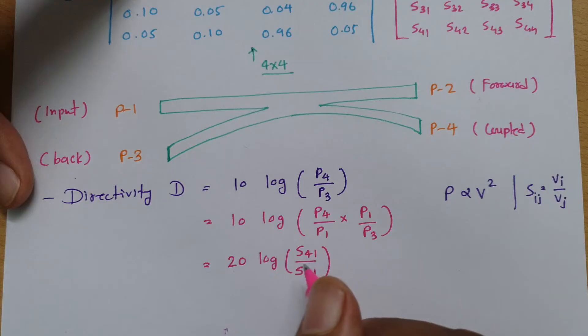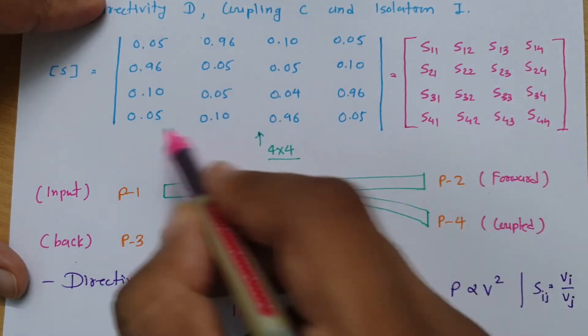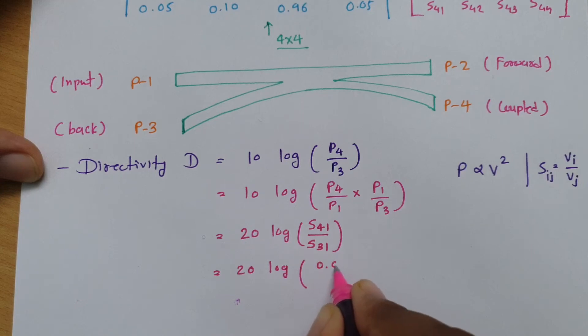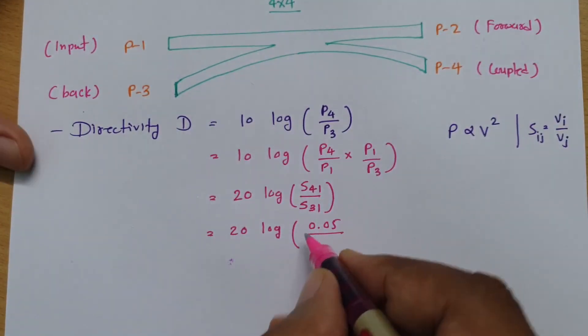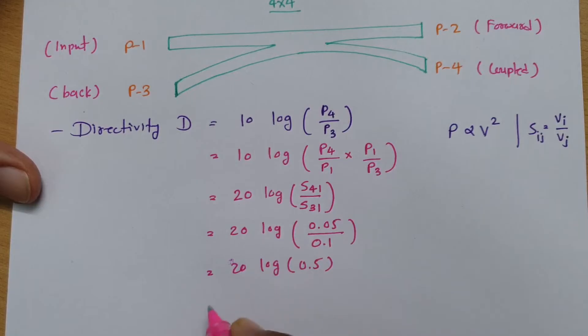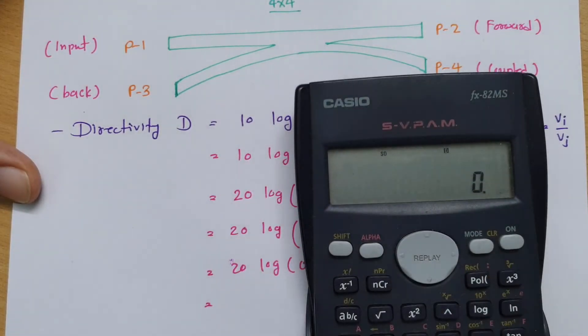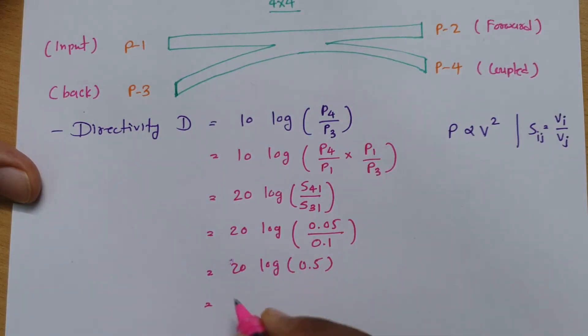If I place these values S41 and S31, it's 20 log of S41. S41 is 0.05 divided by S31, which is 0.1. That is 20 log of 1 by 2, which means 0.5. If we calculate this, you will be getting 20 log of 0.5. That is minus 6.02. This calculation will always be negative, but just consider that as positive. So 6.02 dB.